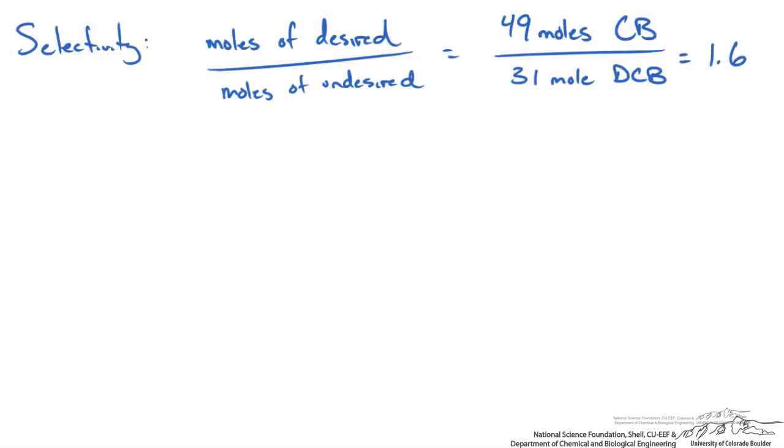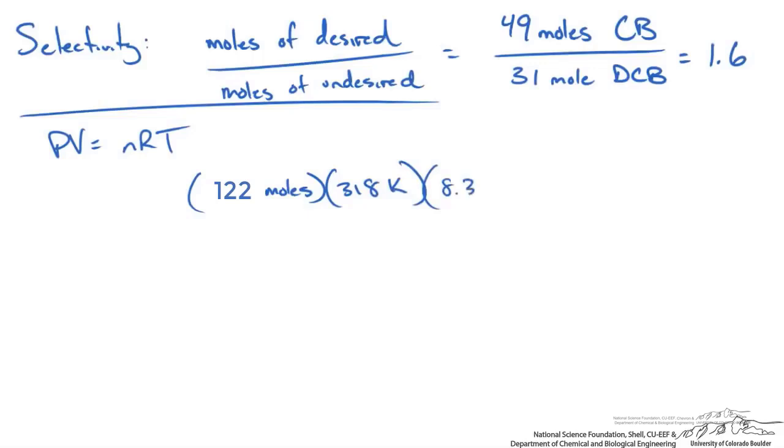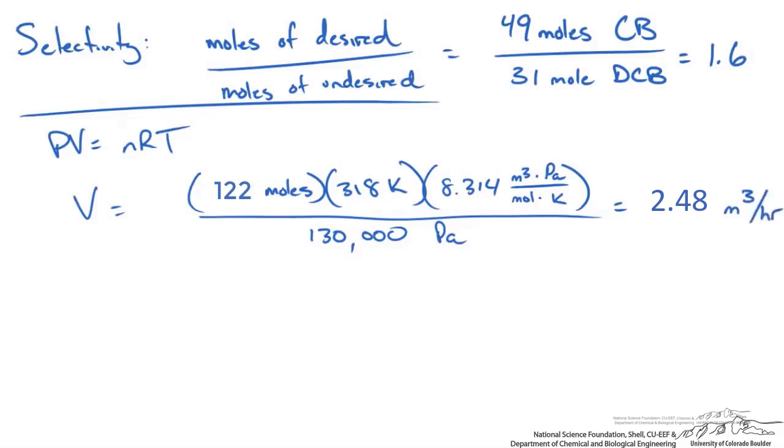For the volume of gas, we need to choose a gas law to use, and we already assumed the ideal gas law due to the near ambient reactor conditions. Using the ideal gas law, we have 122 moles of gas leaving. This is at a temperature of 45 degrees Celsius, or 318 Kelvin. Using the appropriate gas constant, which here is 8.314, and dividing by our pressure, we get a volume of 2.48 meters cubed, and that is per hour based on our basis.